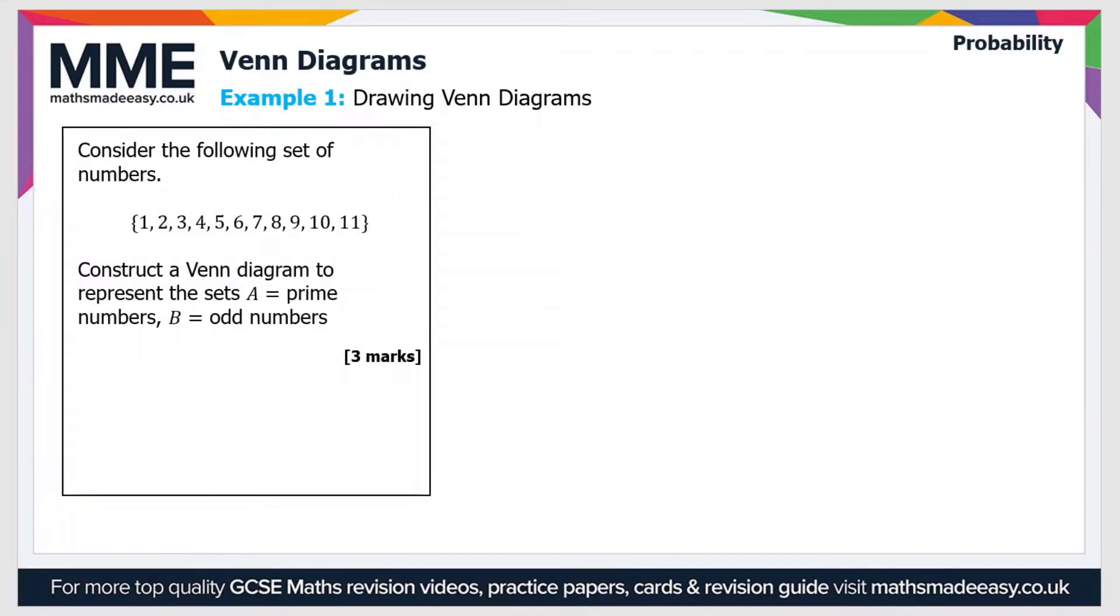So let's have a look at an example question. Consider the following set of numbers - we have the numbers 1 to 11 here. Construct a Venn diagram to represent the set A which is prime numbers and B which is odd numbers. So let's draw our Venn diagram.